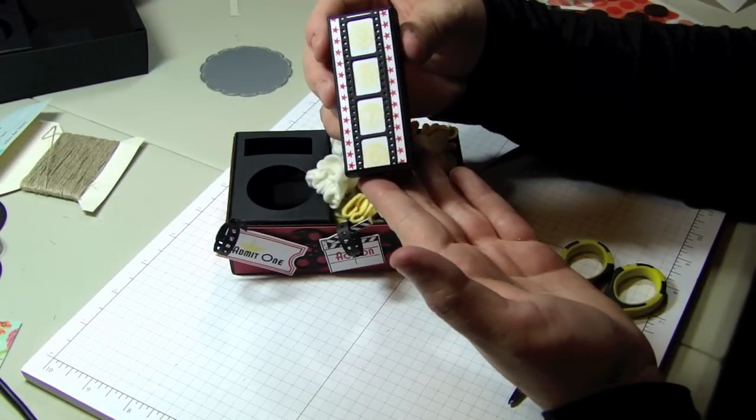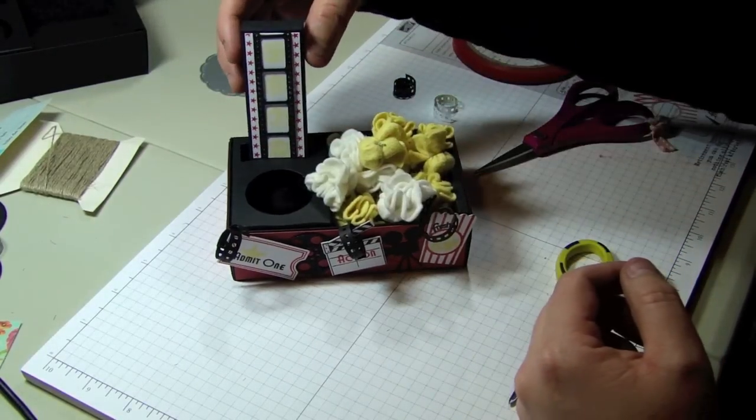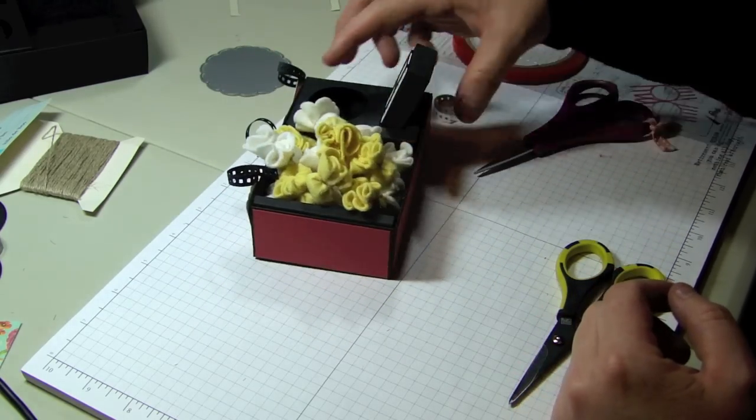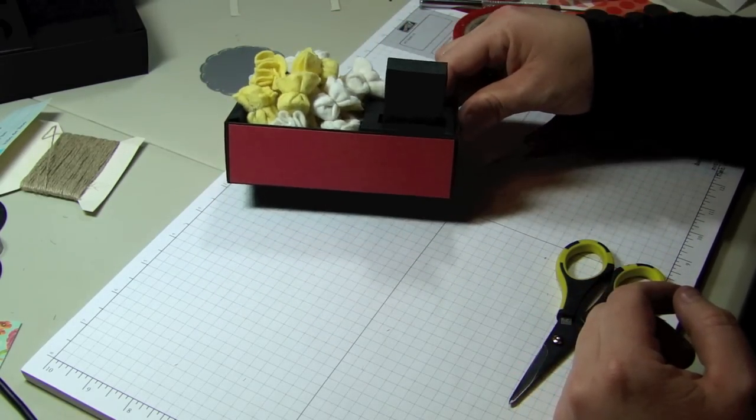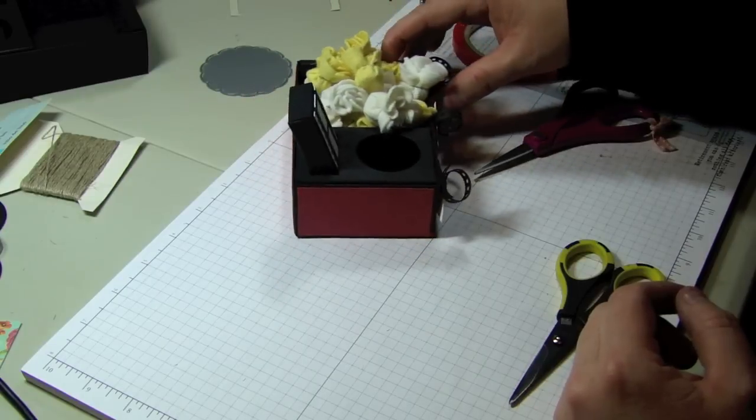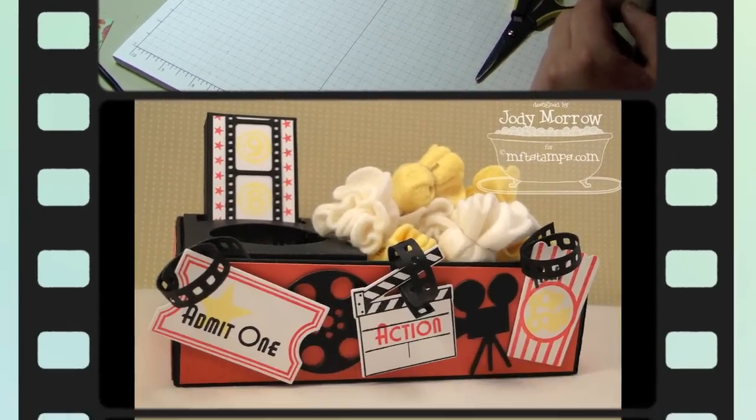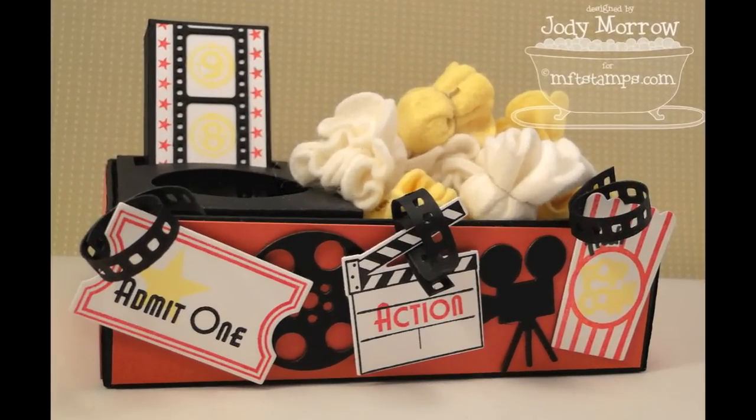Here's some of my finishing touches. I decorated the candy box after filling it. And I covered all four sides with some red cardstock to give it a little pizzazz. The At The Movies Dynamics and Stamp Set can be found at mftstamps.com.